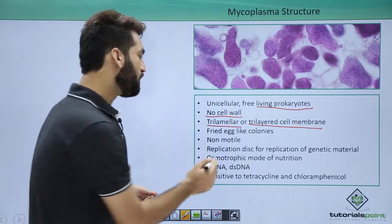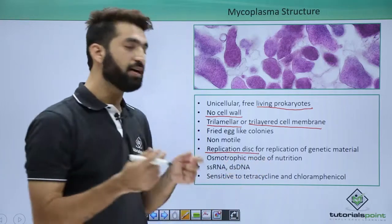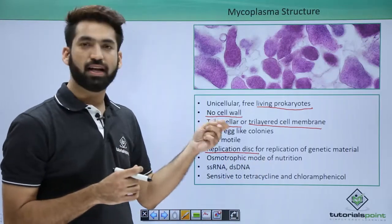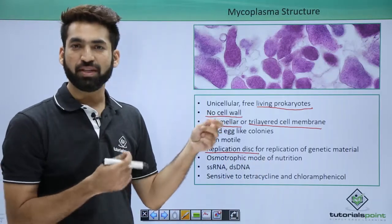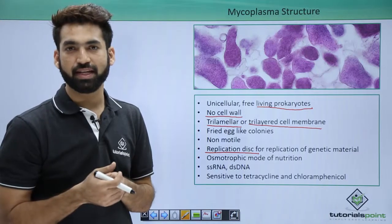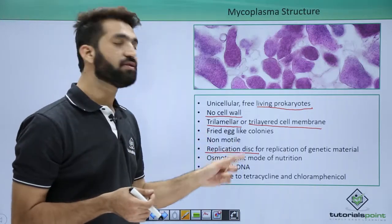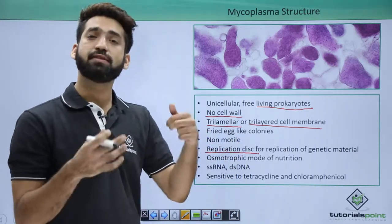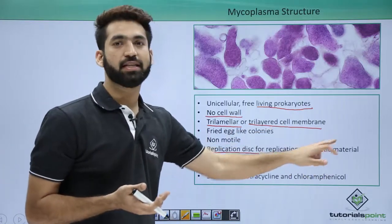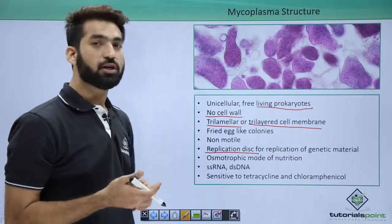Mycoplasma are non-motile — they don't have any structure responsible for motility. They have a replication disk which functions similarly to how mesosome functions in bacteria, assisting in genetic material replication.